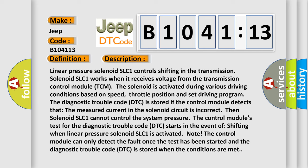The solenoid is activated during various driving conditions based on speed, throttle position and set driving program. The diagnostic trouble code is stored if the control module detects that the measured current in the solenoid circuit is incorrect. Then solenoid SLC1 cannot control the system pressure.